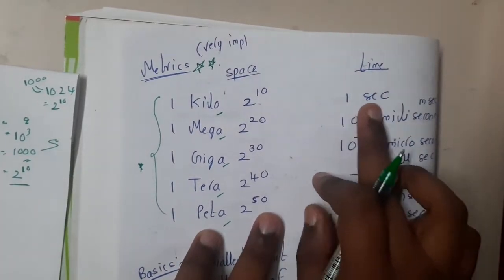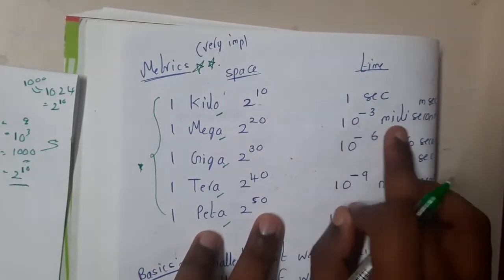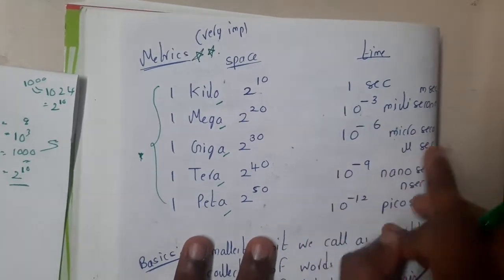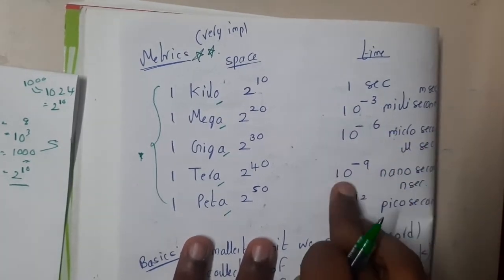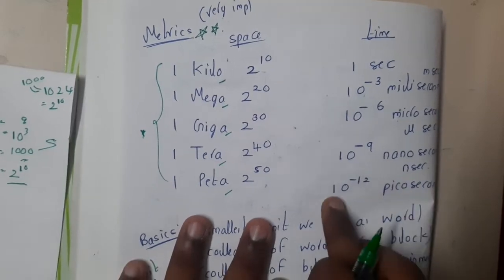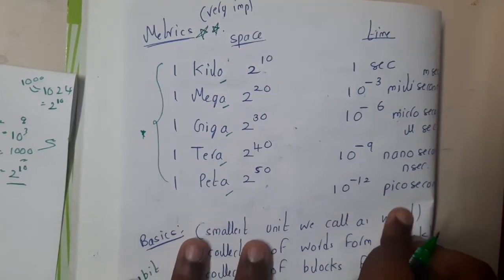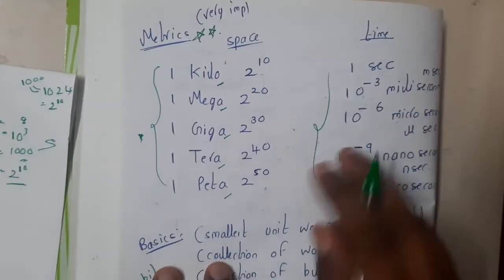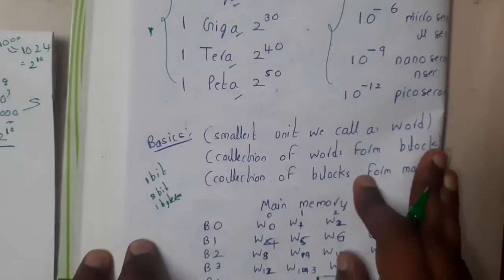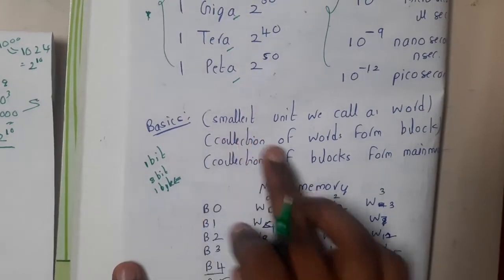With respect to time: 1 second = 10^-3 milliseconds; 10^-6 is microseconds (represented with μ); 10^-9 is nanoseconds (ns); 10^-12 is picoseconds. While solving problems you will understand the importance of these conversions.